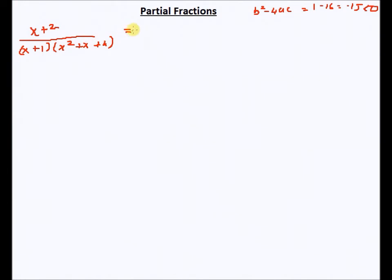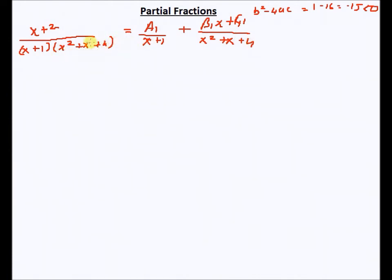So what do we do in this case? I will continue to have a1 upon (x+1), because that is a one-degree term. But since (x²+x+4) is a two-degree term, I will have (b1·x + c1) upon (x²+x+4) as my form. So when I have a two-degree term which cannot be resolved into factors, I write the same term in the denominator but with a one-degree expression (b1·x + c1) in the numerator.